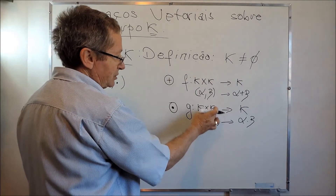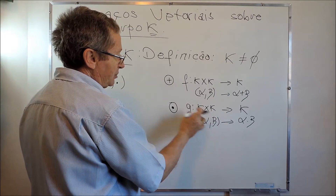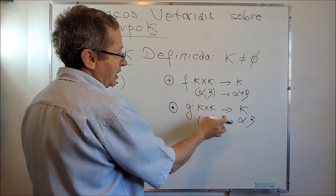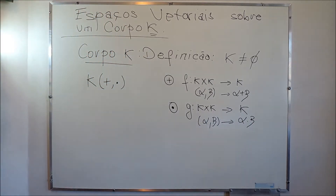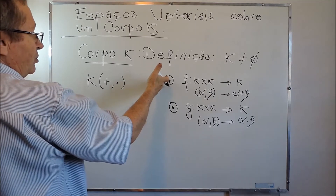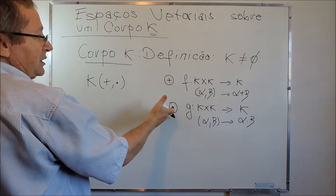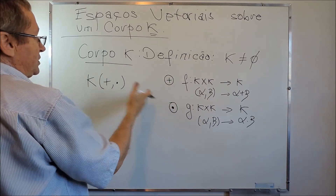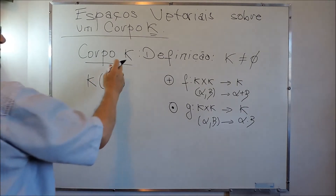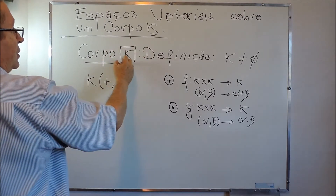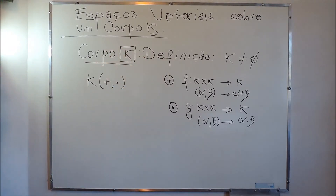Dois elementos operados pela multiplicação em K resultam em outro elemento que também está em K. Nós vamos estudar cada uma dessas duas operações, adição e multiplicação, e ver quais são as propriedades que elas possuem para que K venha a ser um corpo.